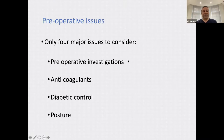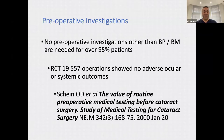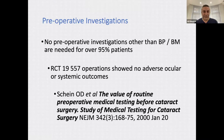In terms of preoperative issues to consider, there are only four: preoperative investigations, anticoagulants, diabetic control, and posture. For preoperative investigations, nothing more than blood pressure and blood glucose is required for the majority of patients. There's good data showing no adverse ocular or systemic outcomes in the absence of a full medical preoperative assessment — no blood tests are needed either.